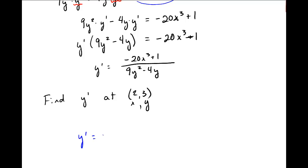So, I get y prime equals negative 20, I plug in x equals 2 cubed plus 1 divided by 9, and then I plug in 3 for y squared minus 4 times 3. Let me get my calculator and we'll figure out what that is.